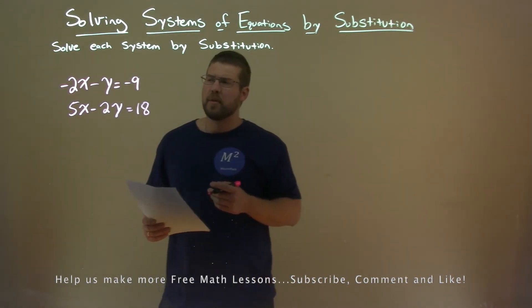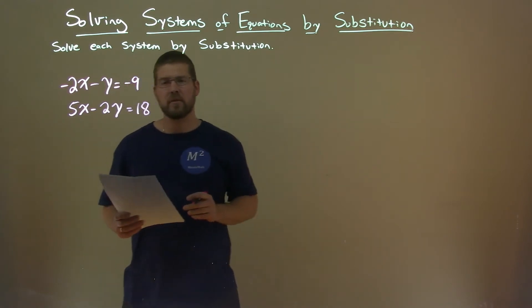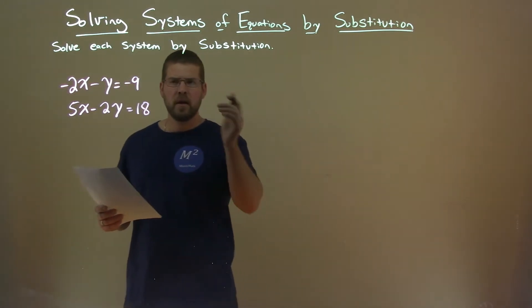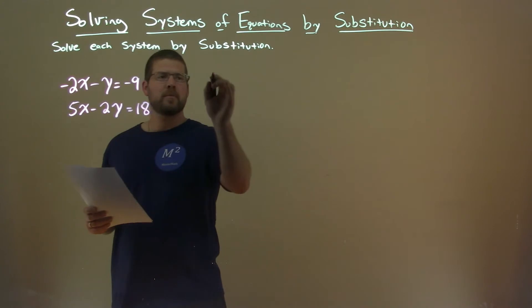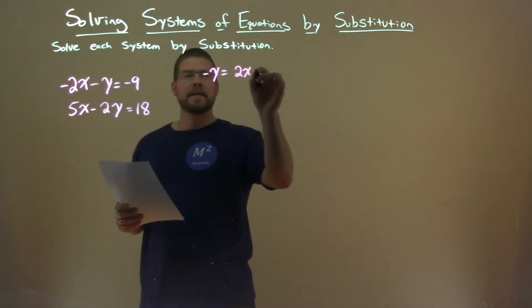Our first step here is to get one of the variables by itself. I think the easiest one is in the first equation to get y by itself. So to do that, if I add 2x to both sides, I'm left with minus y equals positive 2x minus 9.